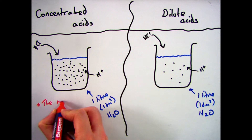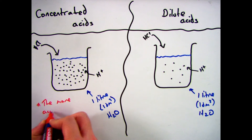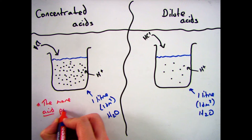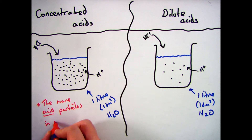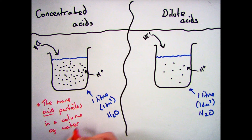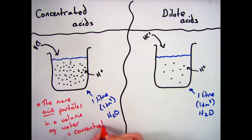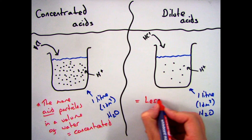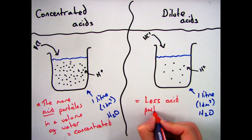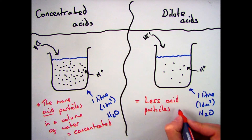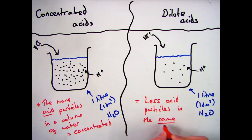So what this means is the more acid particles there are, the more concentrated it becomes and the more acidic, which also means the pH will be lower. A dilute acid, which has fewer particles, will become less concentrated and will have a higher pH, closer to pH 7, which is neutral.